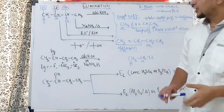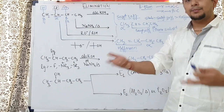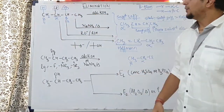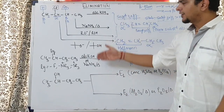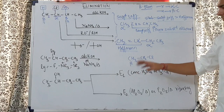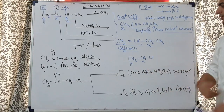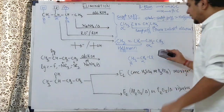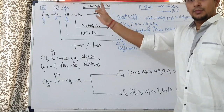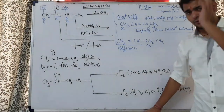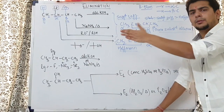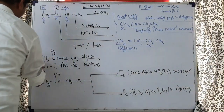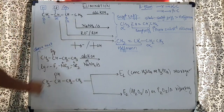They can ask: in which reaction will tertiary butoxide and alcoholic KOH give the same product? For a compound with two beta carbons, alcoholic KOH gives Saytzeff and tertiary butoxide gives Hoffman — different products. But for a compound with only one beta carbon, both give the same product. So understand: first write alpha, then check the beta carbons. If there are two neighboring beta carbons, one product is Saytzeff (double bond in the middle) and one is Hoffman (double bond at the corner).